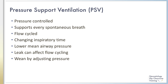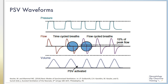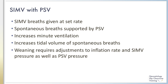Adequate PEEP is required to maintain mean airway pressure and prevent atelectasis. Air leak around the ETT can affect flow cycling and prevent termination of inflation. Weaning from PSV is through reduction of pressure support for each breath. The waveform shows time-cycled breaths on the left with a fixed inspiratory time resulting in a pressure plateau, and flow-cycled breaths on the right where inflation pressure cuts off when flow reaches 15% of peak flow, allowing immediate expiration. PSV can be combined with SIMV, where SIMV inflations are given at a set rate and spontaneous breaths in between are supported with pressure support.